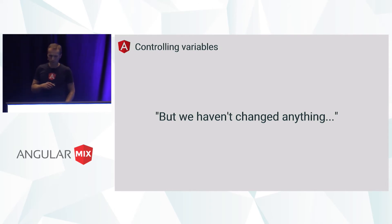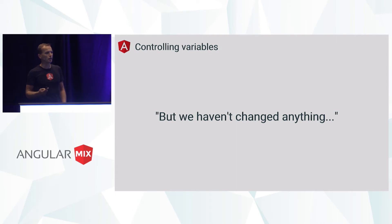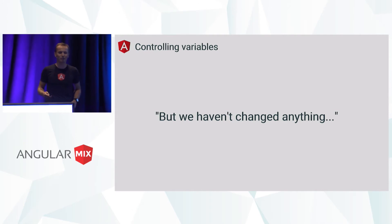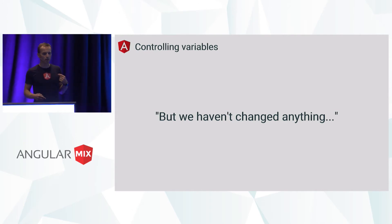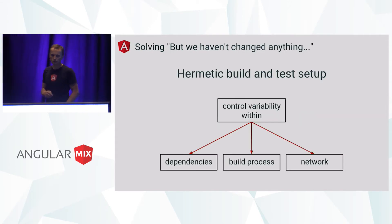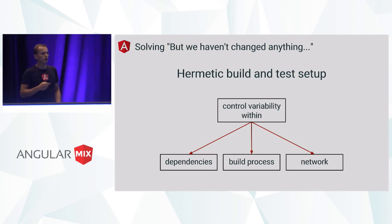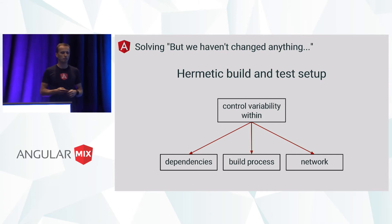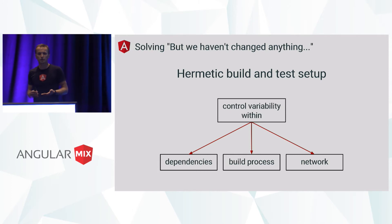Let's take a second problem, which is more serious and more common these days: we haven't changed anything, and yet a build is broken and the application is not working. Usually the reason why things break unexpectedly is that we don't have a hermetic build and test setup. What this means is that we don't have full control over variables. These variables come from many different sources. The most important ones are dependencies, our build process, and the network.